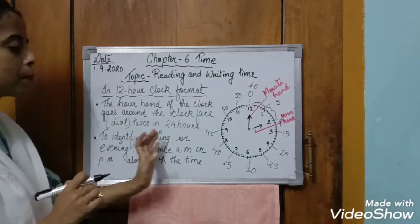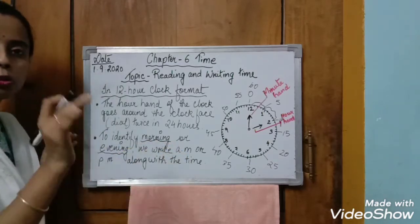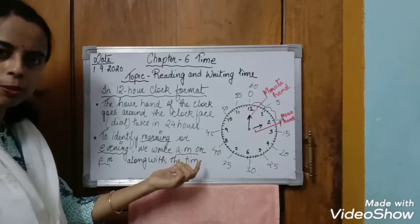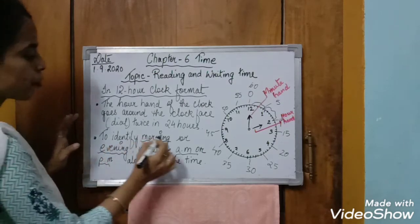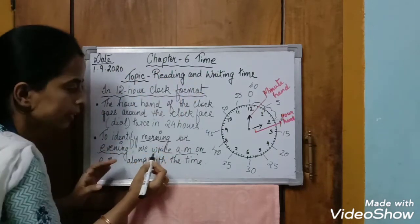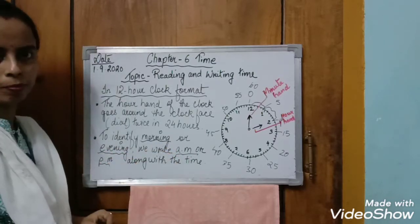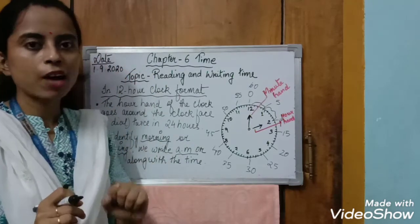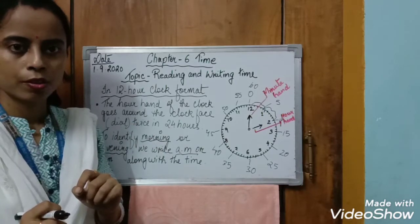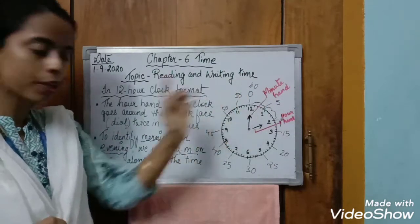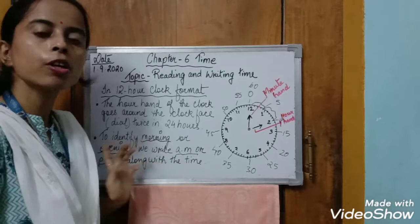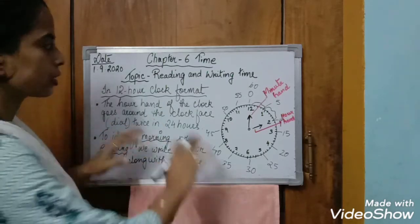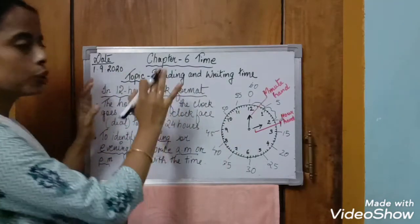To identify morning or evening in a 12-hour clock format, we write AM or PM along with the time. AM stands for ante-meridiem and PM stands for post-meridiem. For example, if it is morning 7, we write 7 AM. If it is evening 5, we write 5 PM. This is how time is shown in a 12-hour clock format.